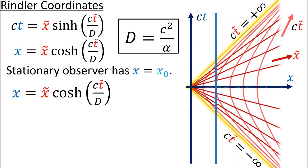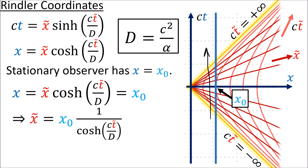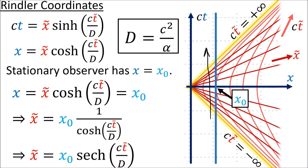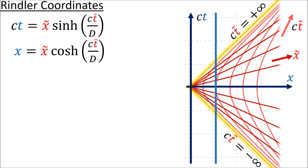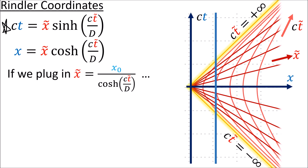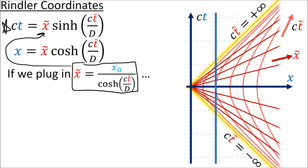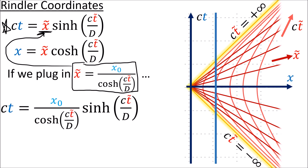We can set this equal to the constant x0 for our vertical world line. Dividing both sides by the cosh term, we get that x-tilde equals x0 times 1 over cosh. And 1 over cosh is the definition of the reciprocal hyperbolic trig function hyperbolic secant, or sech. Also, if we take the formula for ct and plug in our new formula for x-tilde, we get sinh over cosh, which is the definition of hyperbolic tangent.